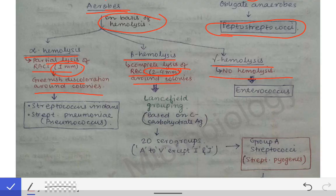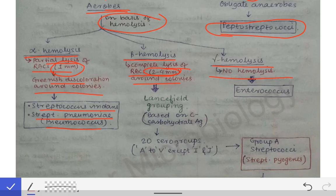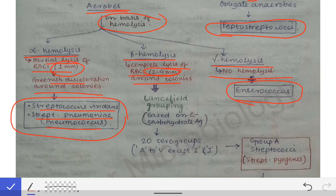The bacteria belonging to alpha hemolysis that we are concerned with are Streptococcus viridans and Streptococcus pneumoniae. Streptococcus pneumoniae is also called pneumococcus — both names refer to the same bacteria, so we need not confuse between them. These are the two alpha hemolytic streptococci. The gamma hemolytic streptococci are the Enterococcus.